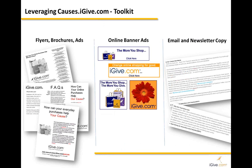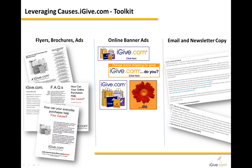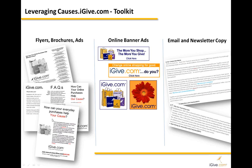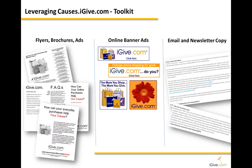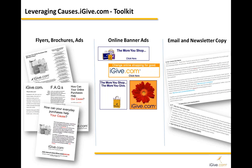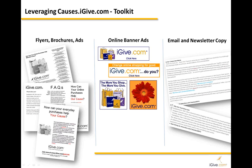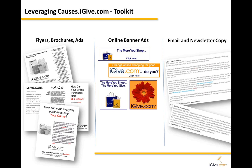Here's some of the pieces in the toolkit. You have these flyers and brochures — most are designed to allow you to customize them easily, or they come pre-customized with your cause name on them. So if you're a pet rescue or helping fight some terrible disease, these customize themselves so you're talking in a very personalized manner to your constituencies. There are also banner ads, as well as copy for email and paper newsletters.